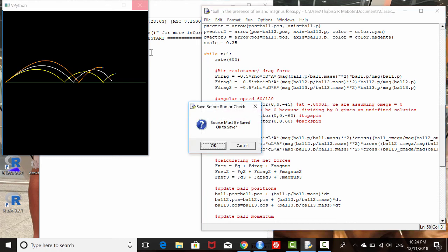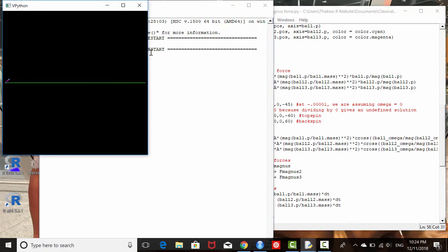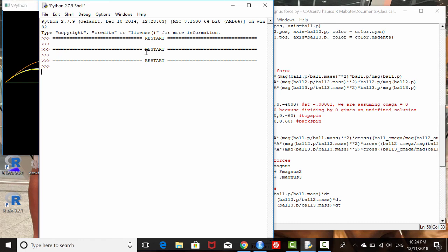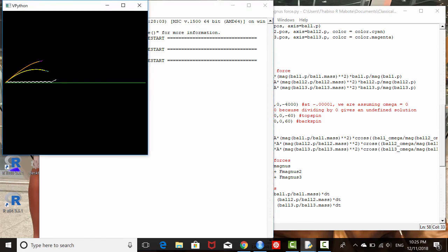When the topspin is increased, the ball's flight gets shortened and this spin can be increased to large numbers before our code crashes.